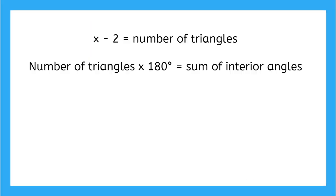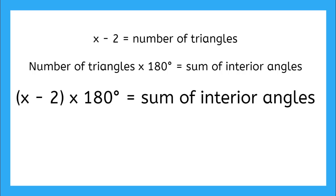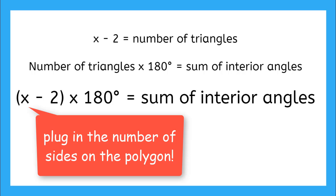So if these are my two formulas, x minus two, or number of sides minus two equals number of triangles, and number of triangles times 180 degrees equals the sum of the interior angles, I can plug in x minus two into the number of triangles in my second equation. And that will give me (x minus 2) times 180 degrees equals the sum of interior angles. So all I need to know is the number of sides on my polygon, and I can calculate the sum of the interior angles.